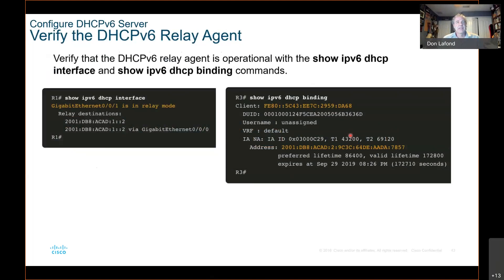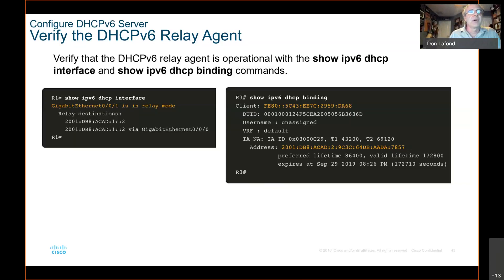Verifying the DHCPv6 relay agent. The DHCPv6 relay agent is operational with the show IPv6 dhcp interface and the show IPv6 dhcp binding command. Show IPv6 dhcp interface says that it's in relay mode. Then show IPv6 dhcp binding, and you can see it's giving you some information about the address and the preferred lifetime — that would be stateful, obviously.